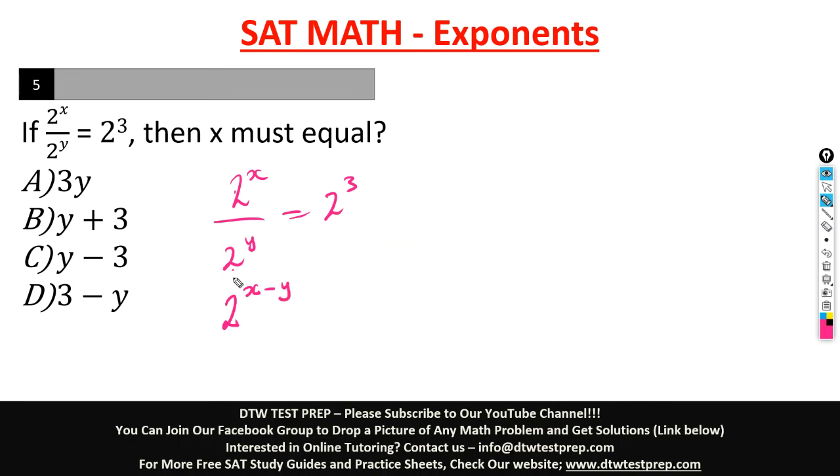The same base, you just subtract the powers, equal to 2 raised to the power of 3. When you have the same base on each side of the equation, you cancel it out. And you are left with x minus y equal to 3.